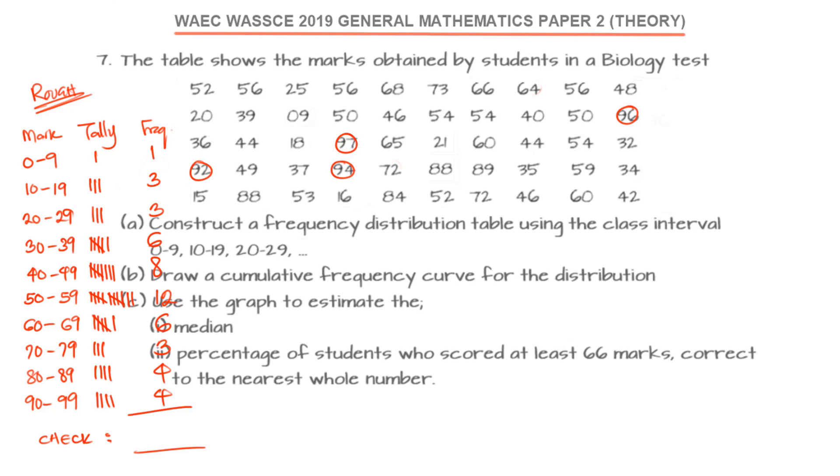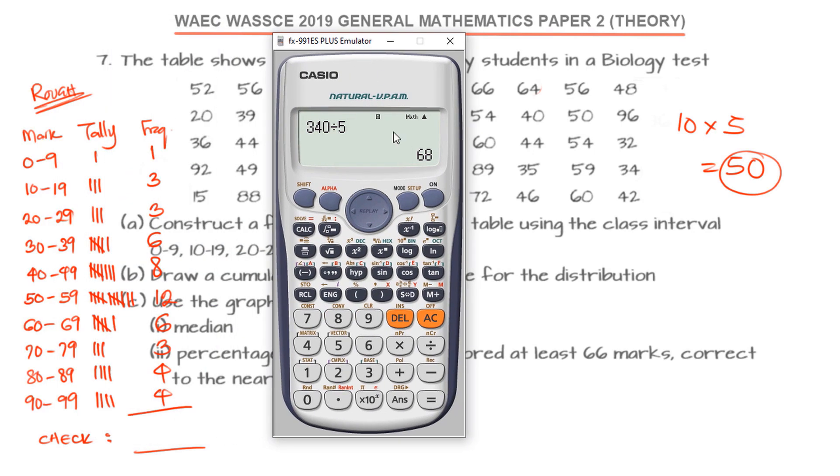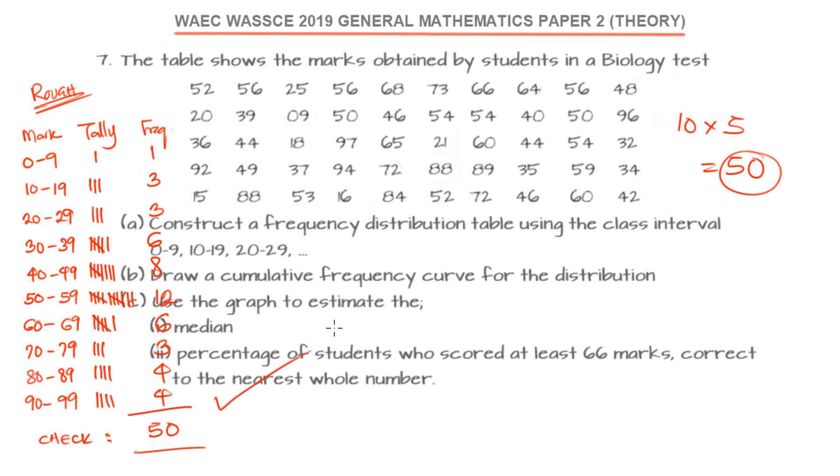Now we want to check. Already we are seeing that we have 10 columns and 5 rows. That would be 10 times 5, that's 50. So all the entries, if you add all our frequencies, they should give us 50. We have 1 plus 3 plus 3 plus 6 plus 8 plus 12 plus 6 plus 3 plus 4 plus 4, that's 50.